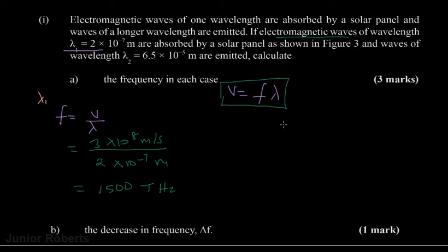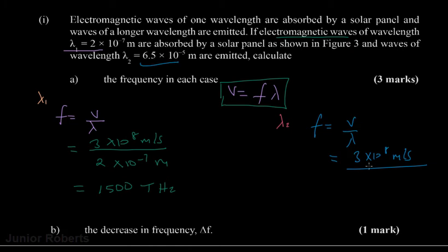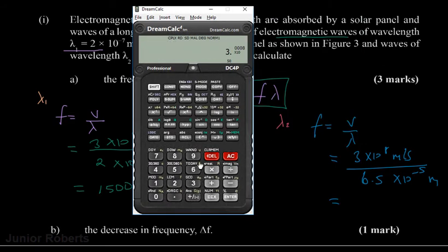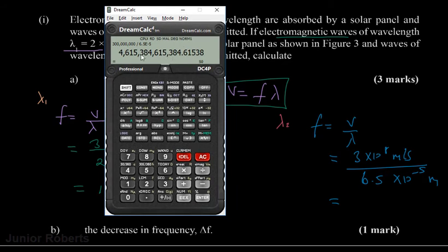Now finding the frequency for λ₂ = 6.5×10⁻⁵ m. Again using f = v/λ, with v = 3×10⁸ m/s divided by 6.5×10⁻⁵ m. Using the calculator, we get 4.62 terahertz.